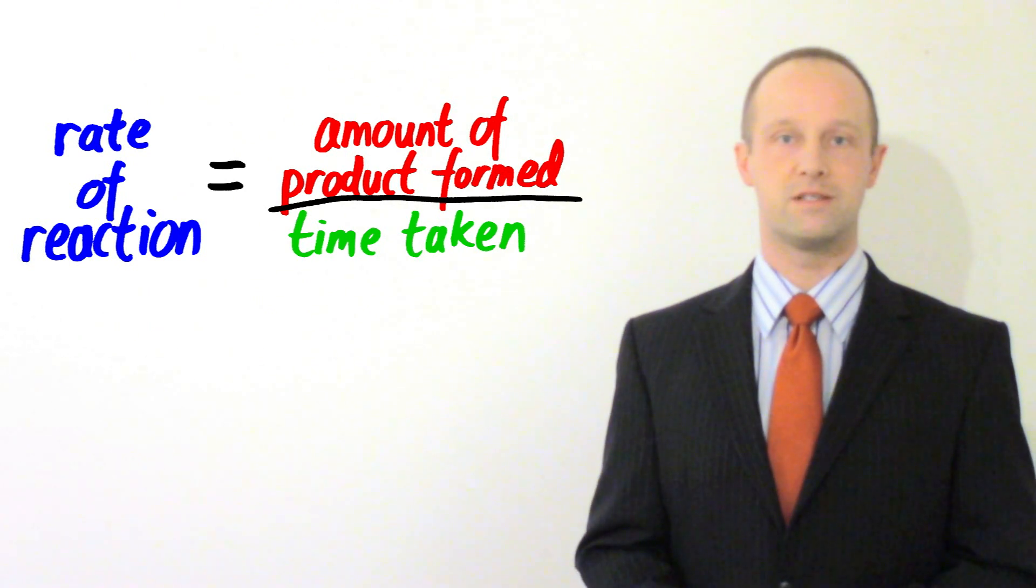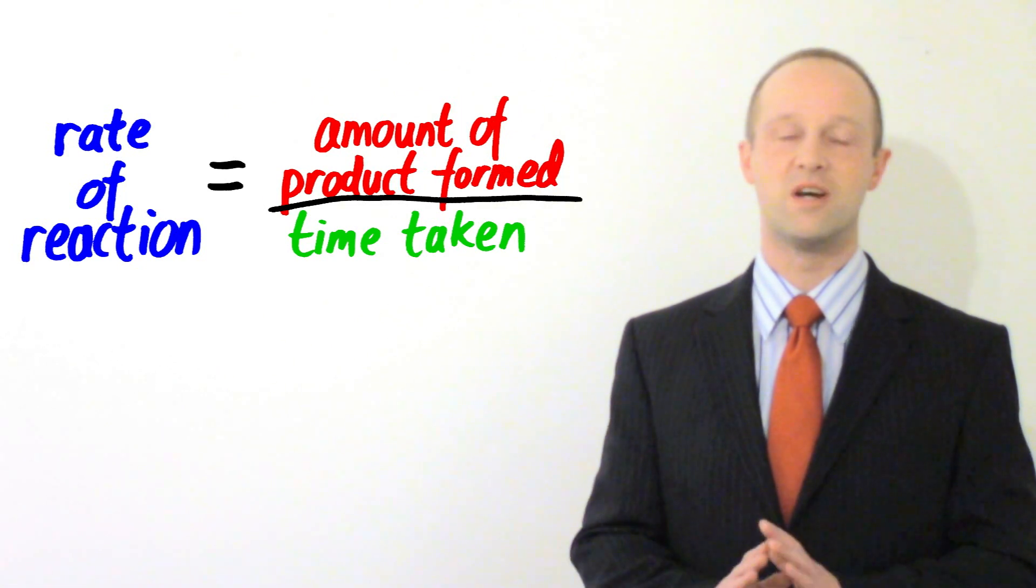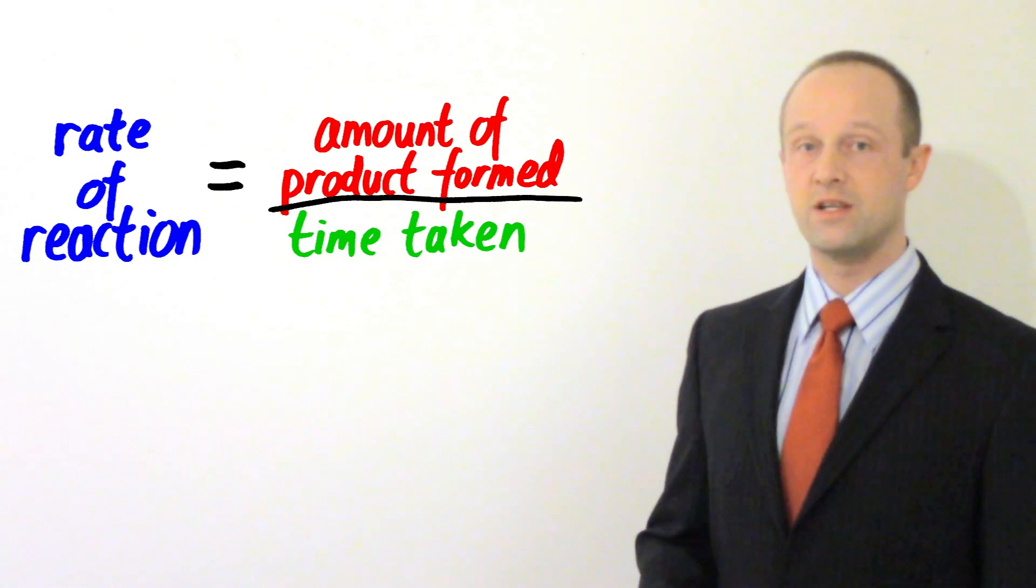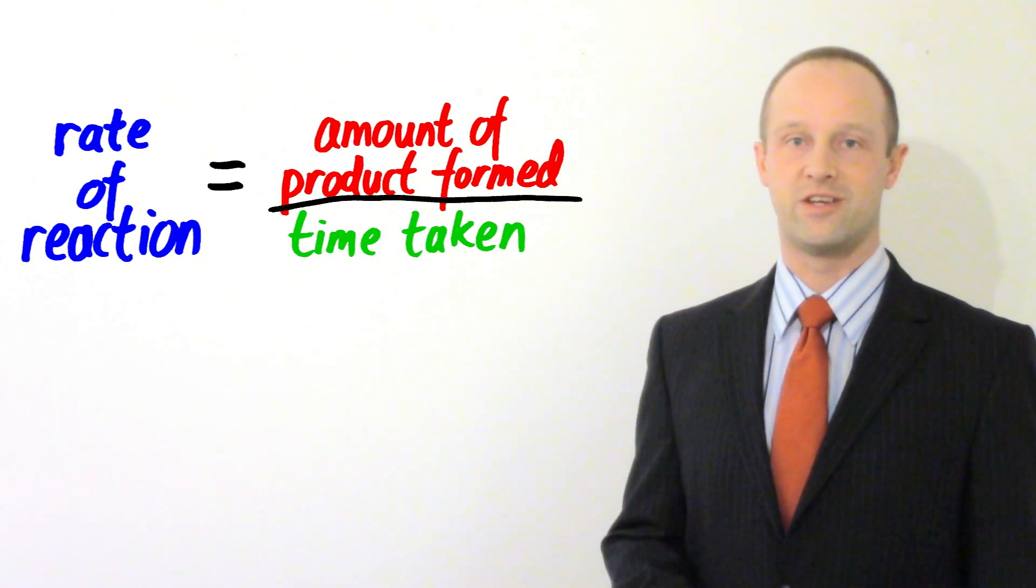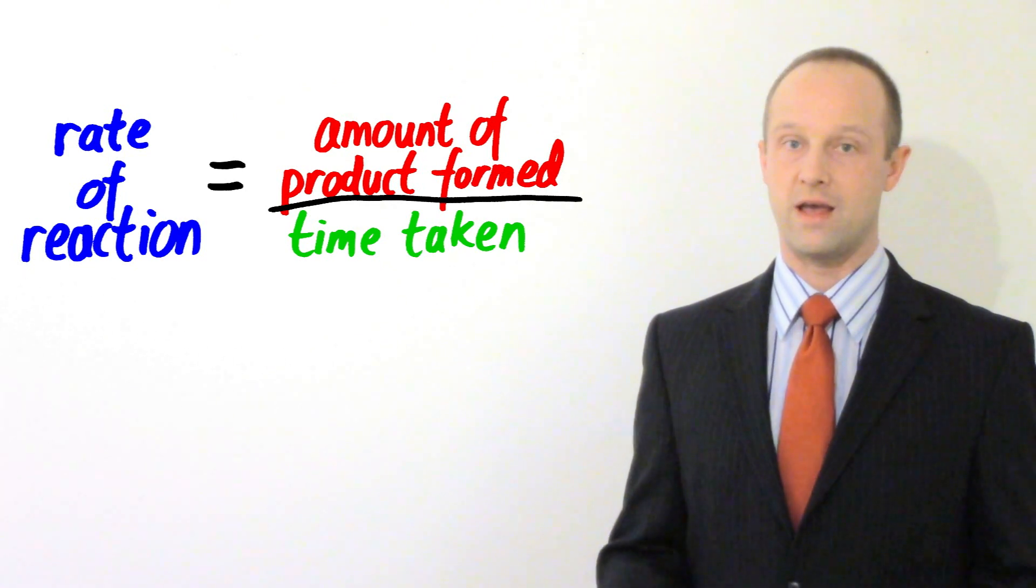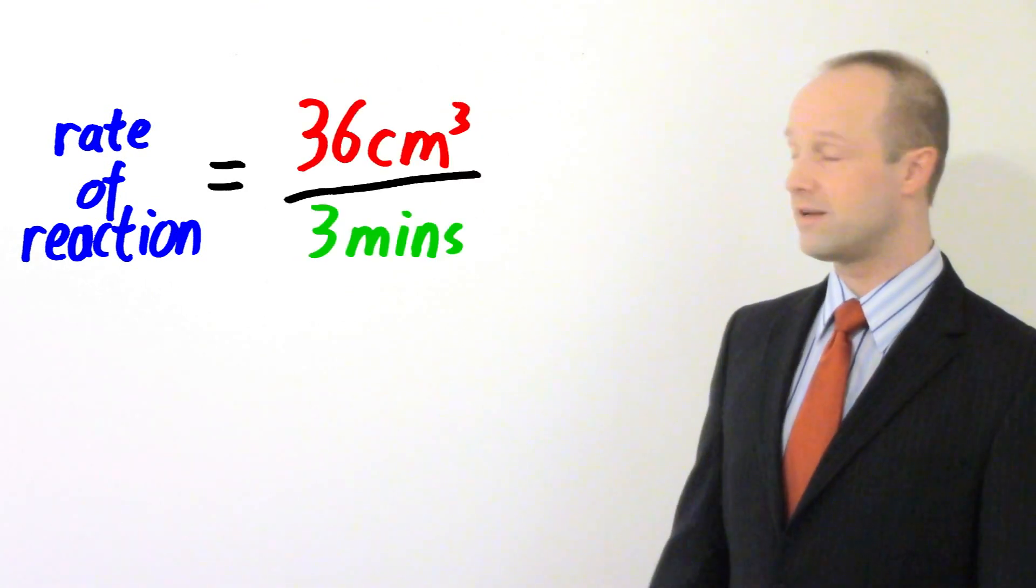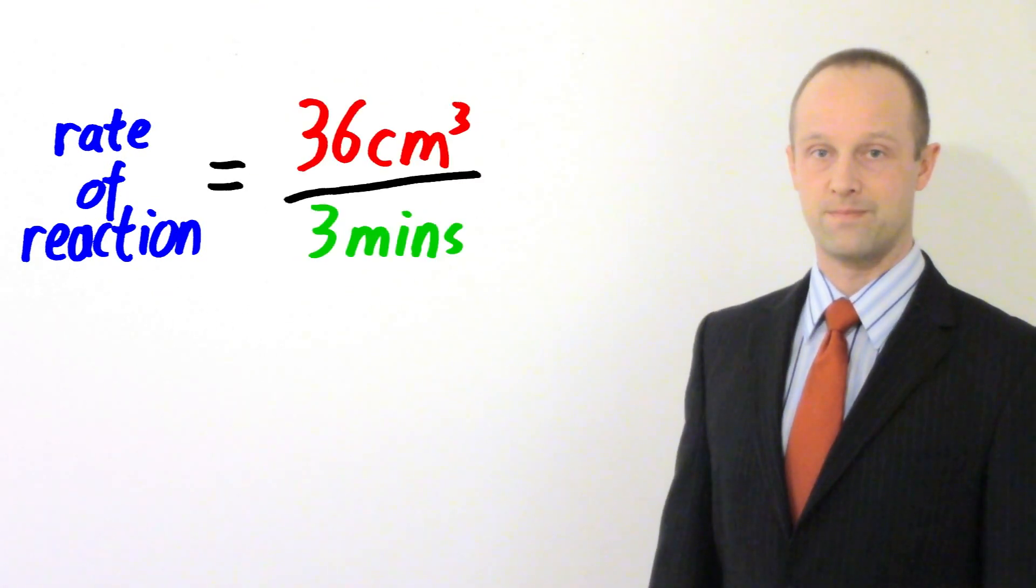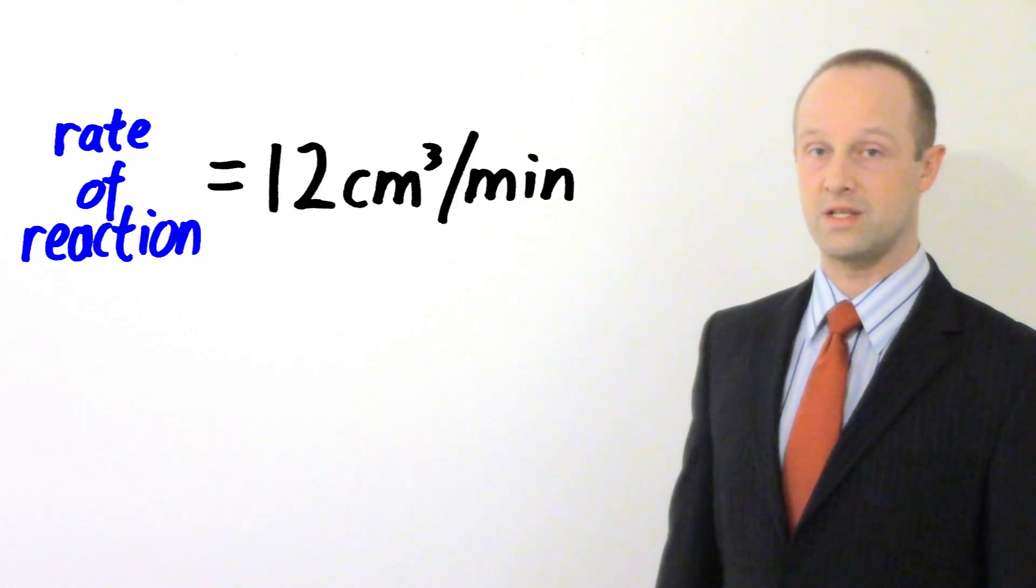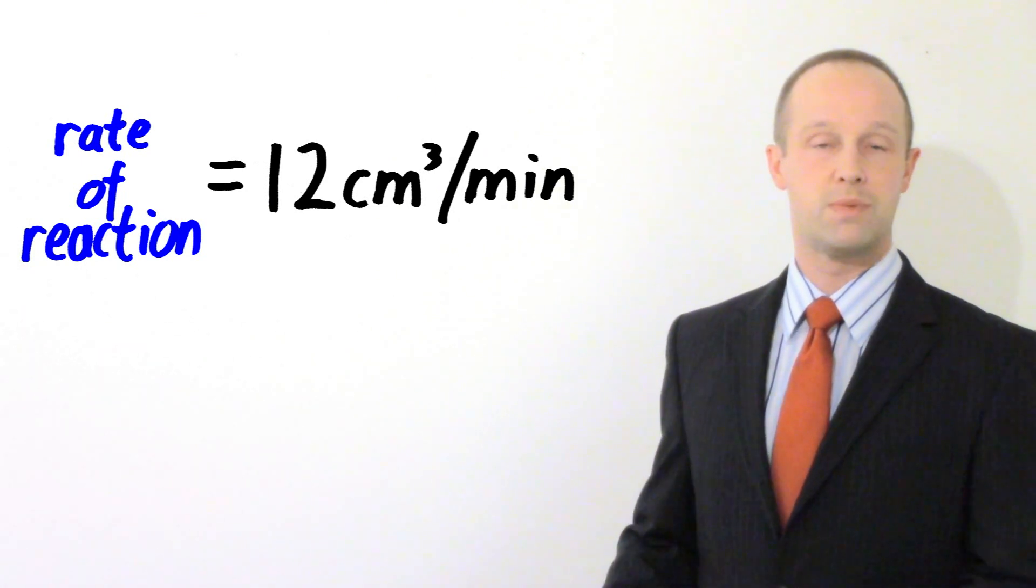This time our amount is going to be a volume, but it's exactly the same sort of calculation. It works in exactly the same way. So let's imagine that our reaction has produced 36 centimeters cubed of hydrogen, and that it's taken three minutes to run. So here our amount is 36, and our time is three. You're just going to do 36 divided by three, and that gives you 12. What are our units going to be? Well, we started out with centimeters cubed and minutes. So it's going to be 12 centimeters cubed per minute.